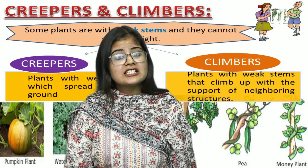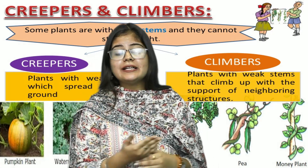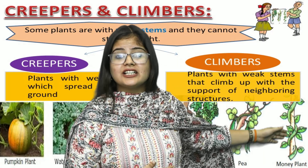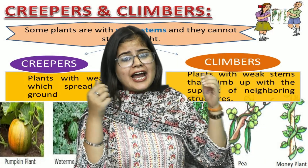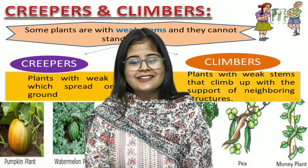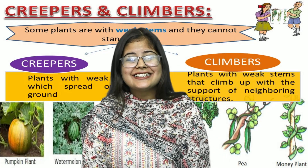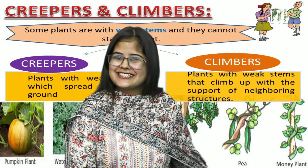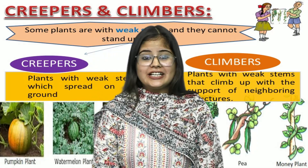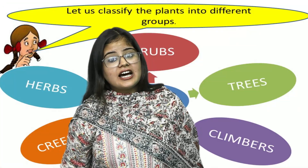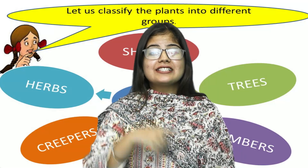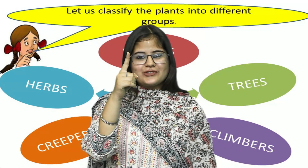Climbers are those plants which climb — they take the support of neighboring structures. A common example of a climber that we have all seen in our homes is the money plant. These are the five different kinds of plants: herbs, shrubs, trees, climbers, and creepers.